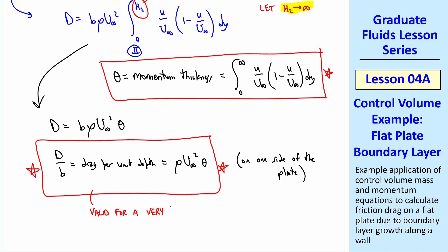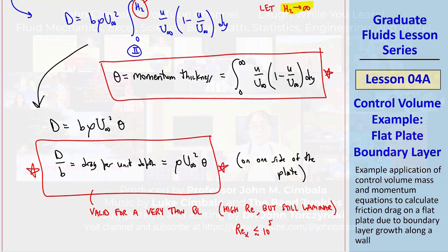The caveat is that this result is valid for a very thin boundary layer: high Reynolds number but still laminar flow, so the Reynolds number based on x must be less than about 10⁵ for this result to be valid.